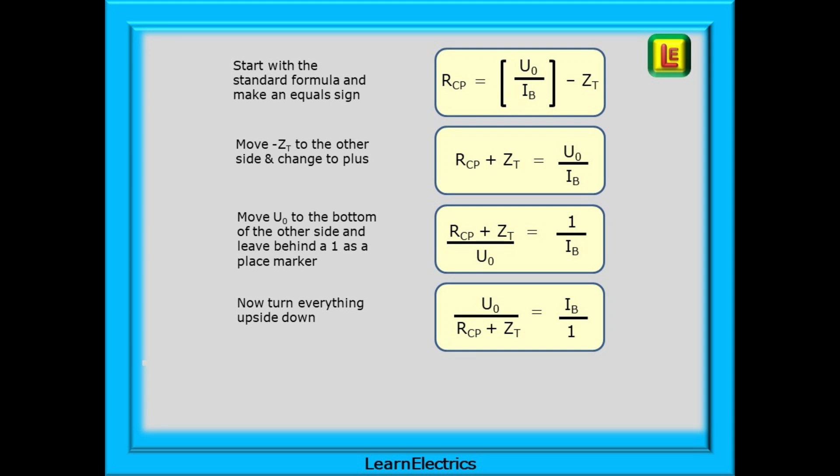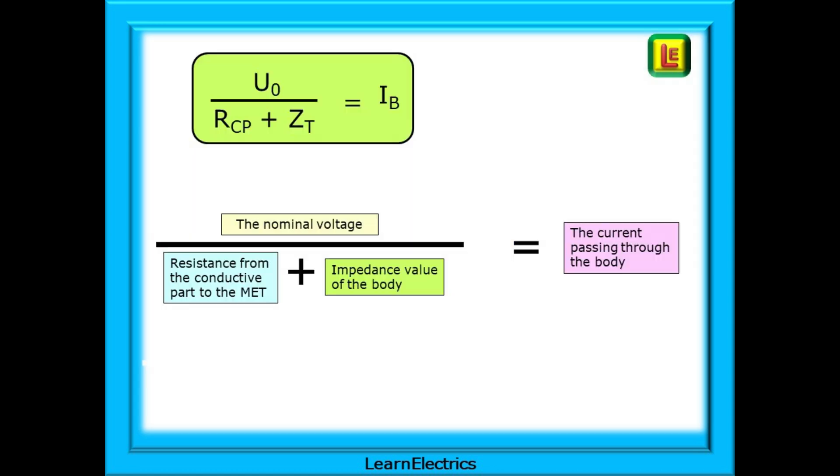Follow these steps and pause the video if you need to. Start with the standard formula and make an equals sign. Now move minus ZT to the other side and change the minus to a plus. We can move U0 to the bottom of the other side and leave behind a 1 as a place marker. Now turn everything upside down to arrive at the finished formula as shown at the bottom. This formula is telling us to do what? It is telling us that if we take the nominal voltage and divide this by the resistance from the conductive part of the MET and the resistance of the body added together, the result will be the value of current passing through the body. Ohm's law again. Voltage divided by resistance equals current.